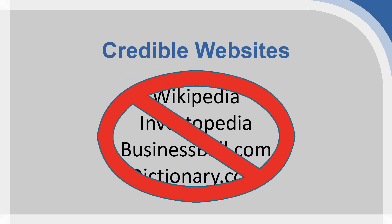Wikipedia is a wonderful repository of knowledge, but anybody can edit it — edits are often anonymous or through pseudonyms, so we don't know who is providing the information. There should be no citations for Wikipedia in academic work. The same goes for Investopedia — also not a source we want to use.